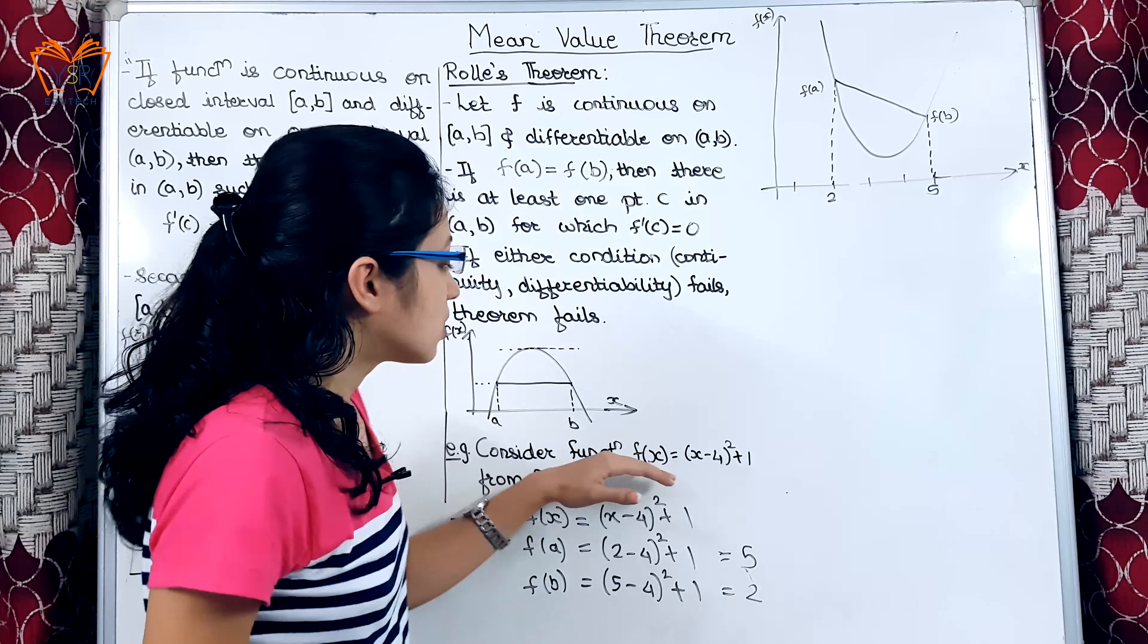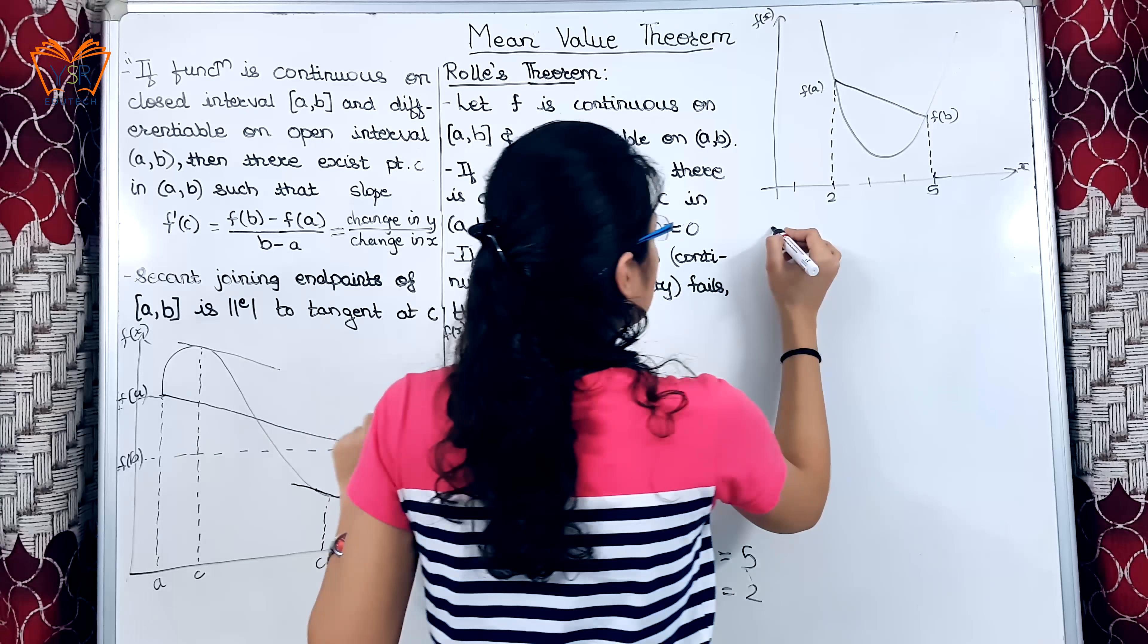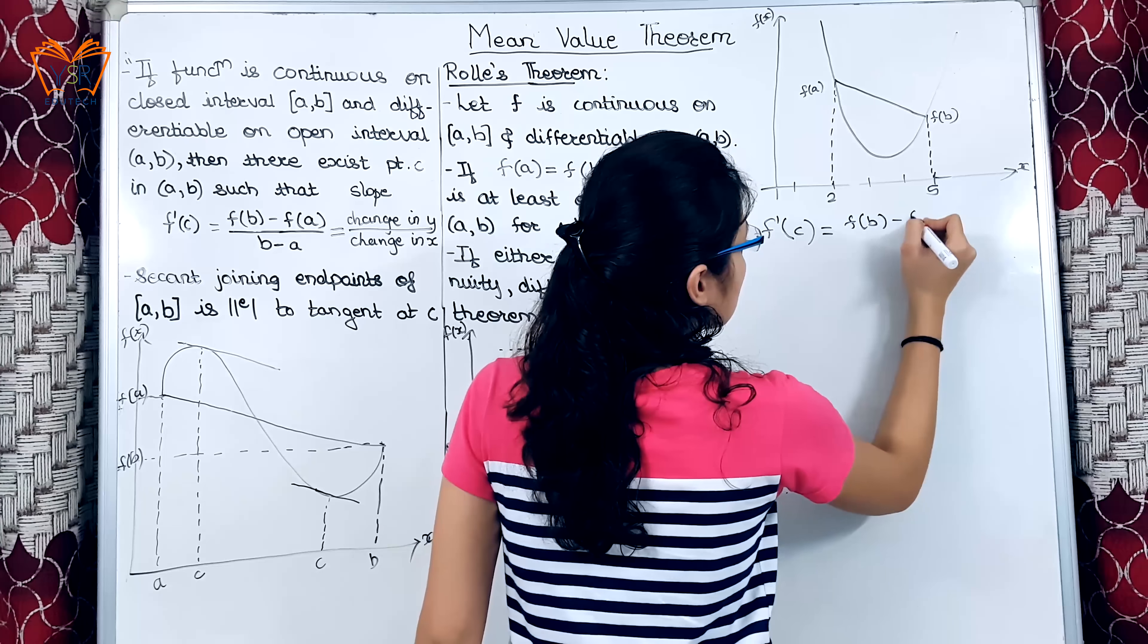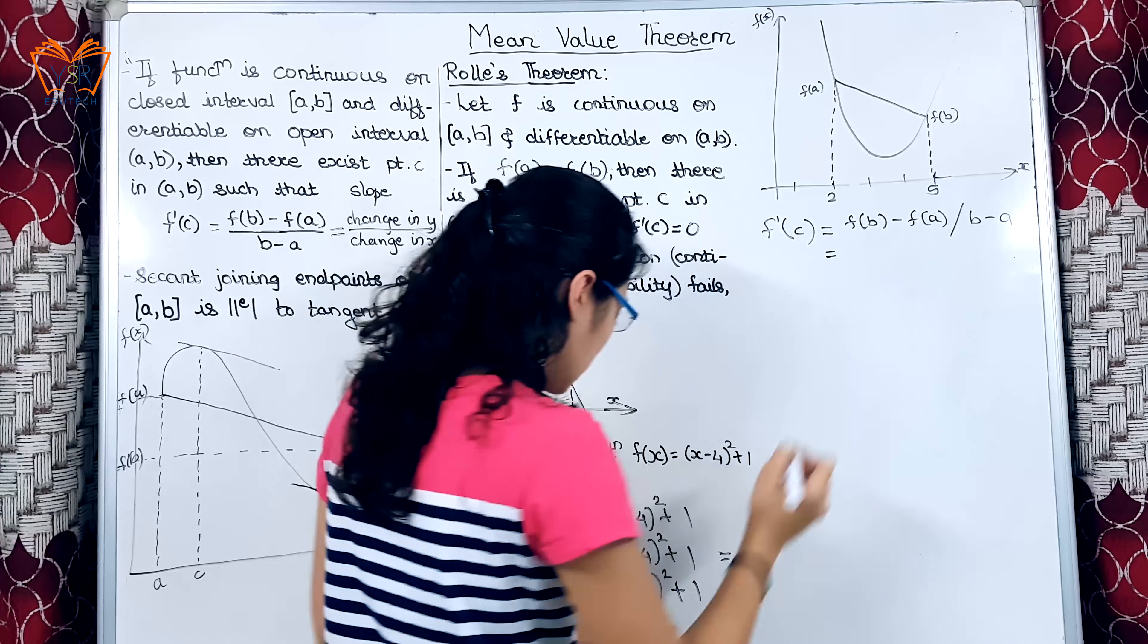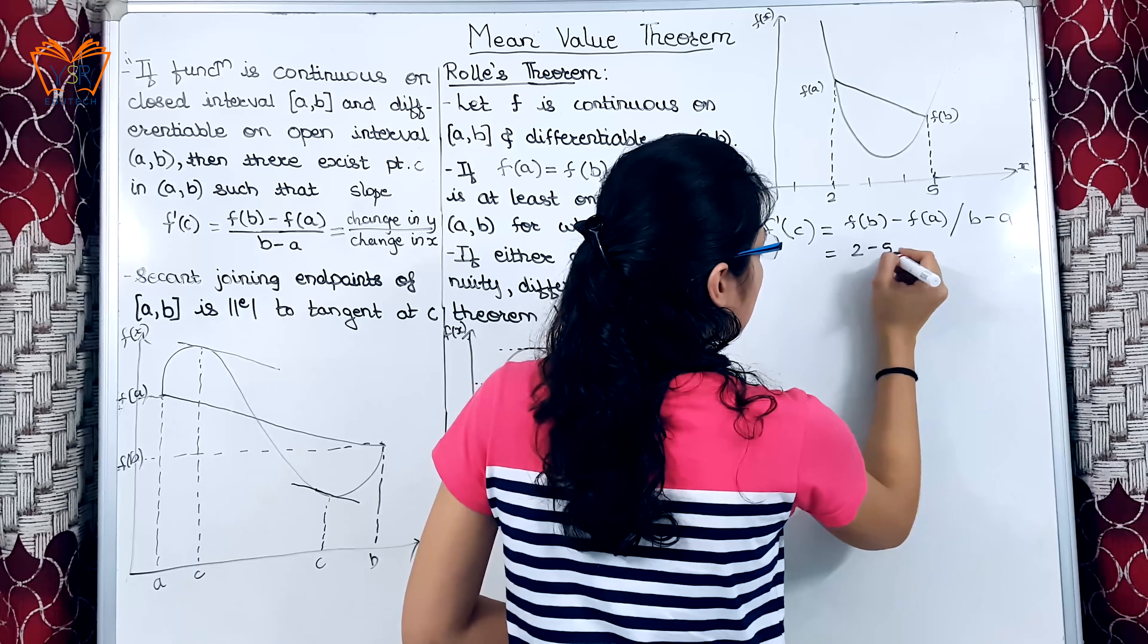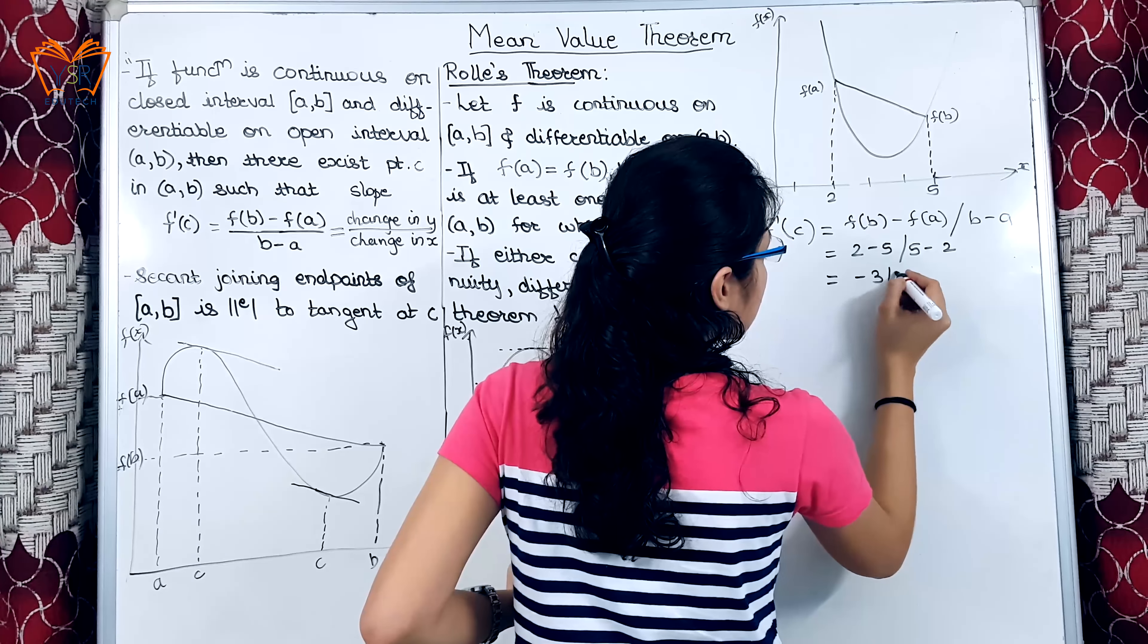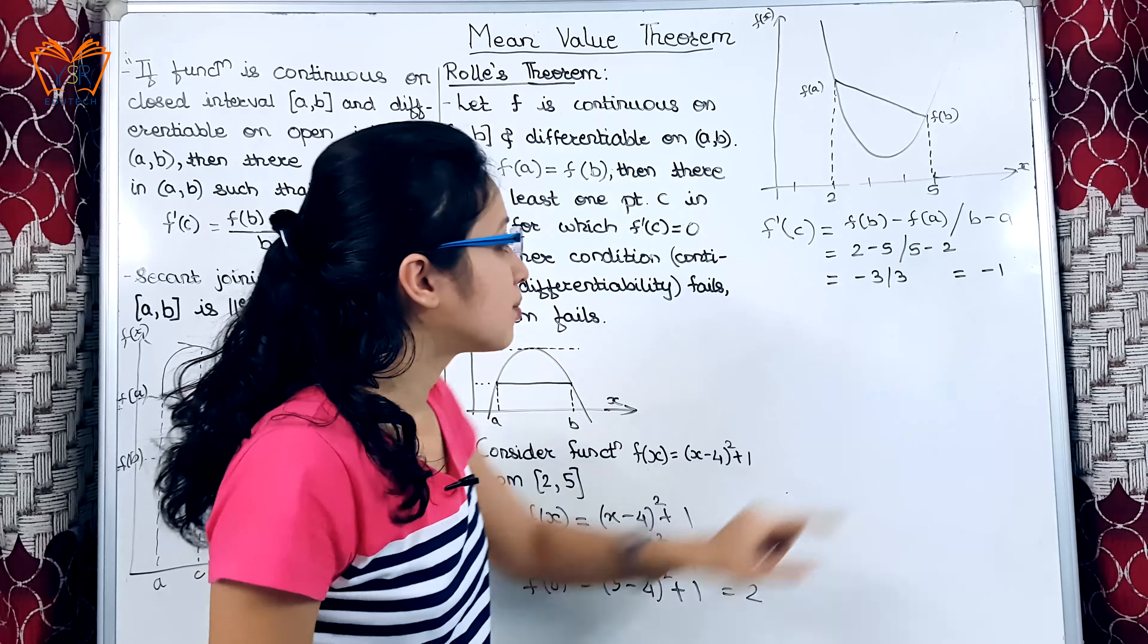So, this is our secant that joins the two end points a and b. Now, using mean value theorem, we are going to find out the value of c. For that we have the formula f'(c) = [f(b) - f(a)] / (b - a). f(b) here is 2 minus 5 divided by b minus a. b minus a is 5 minus 2. This gives -3 divided by 3 is equal to -1.